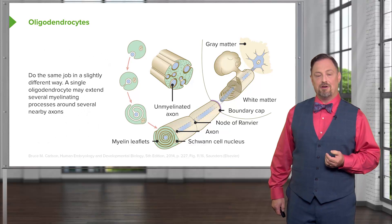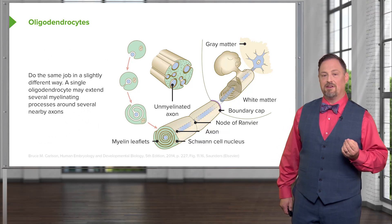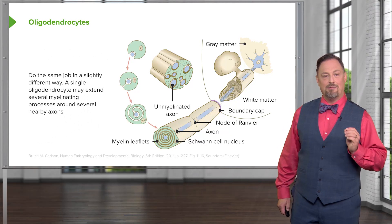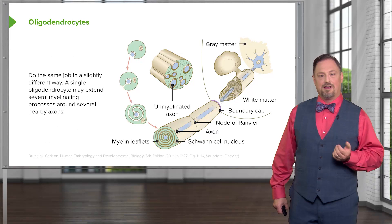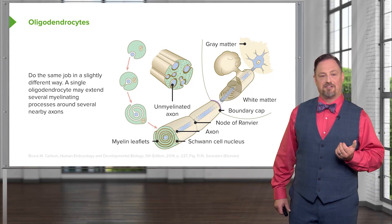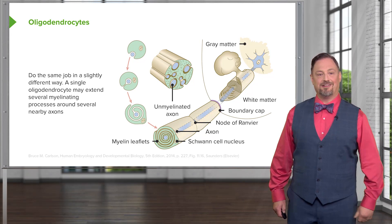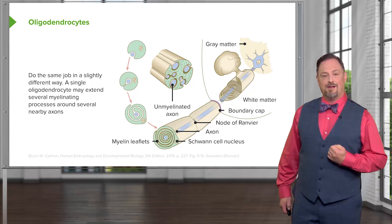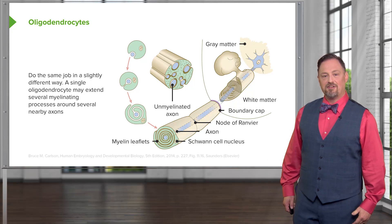In the central nervous system, a different set of cells called oligodendrocytes does the same myelination job. The key distinction is that one oligodendrocyte can myelinate segments of several axons, whereas Schwann cells only myelinate a small segment of a single axon. Thank you very much, and we'll go a little bit deeper into the nervous system as we move forward.